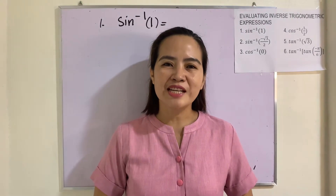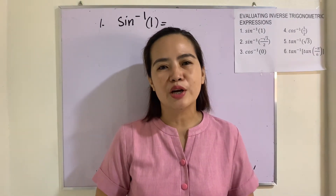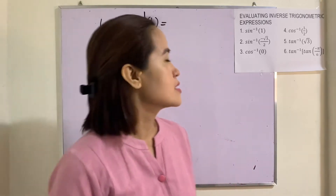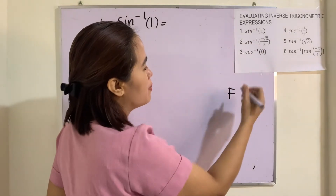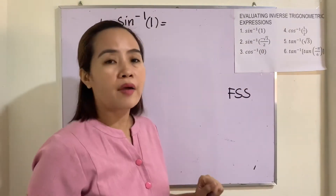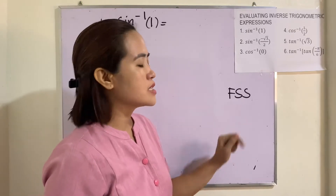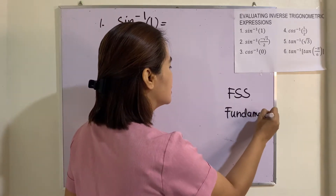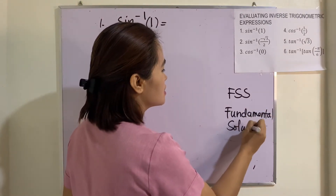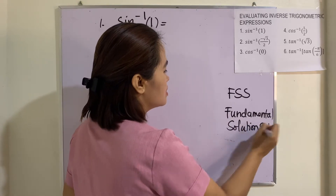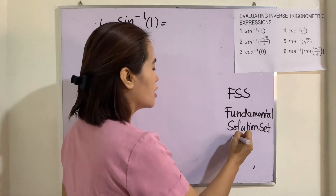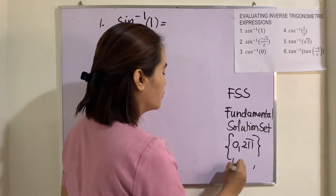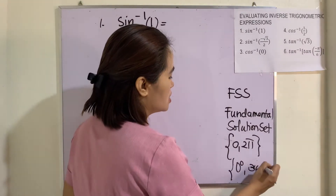Hey everyone, welcome back to my channel. Our most essential learning competency for today is evaluating the inverse of trigonometric functions. Before we give these examples, I want you to bear this in mind: FSS — Fundamental Solution Set. We will be using this as our solution set from 0 to 2π, or 0 degrees to 360 degrees.